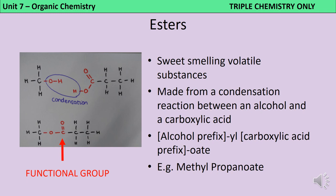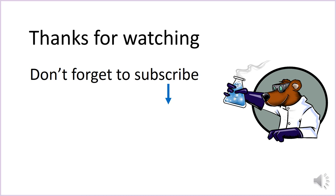Esters are sweet smelling volatile substances, which means they evaporate very easily, so they're often used as flavourings and as perfumes. Their functional group is a carbon atom double bonded to an oxygen atom and single bonded to another oxygen atom, which then in turn is bonded to another carbon atom. They're made from a condensation reaction between an alcohol and a carboxylic acid — a condensation reaction is one where a small molecule is lost, in this instance water. To name an ester, you take the prefix of the alcohol — for instance 'meth' for methanol — and put 'yl' on the end, then the prefix for the carboxylic acid — say 'propan' for propanoic acid — and put 'oate' on the end. So the ester formed from methanol and propanoic acid is methylpropanoate.